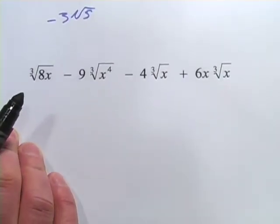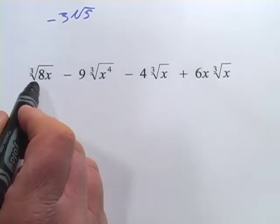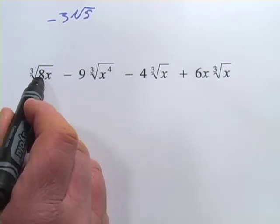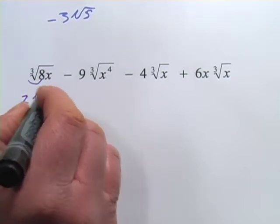Now we've got a much more complex and hairy looking thing here. First of all, we've got the cube root of 8x. Well, I know the cube root of 8 is 2, so I can pull that out. And that would just be 2 times the cube root of x. Can't do anything else there, I don't think.